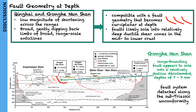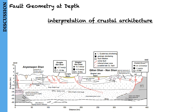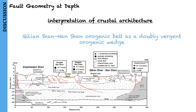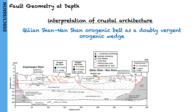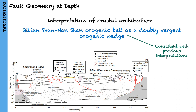The overall interpretation characterizes the Qinghai-Nanshan orogenic belt as a doubly vergent orogenic wedge, generally consistent with previous interpretations, with the key exception being that they do not envisage that brittle faults extend into the lower crust.